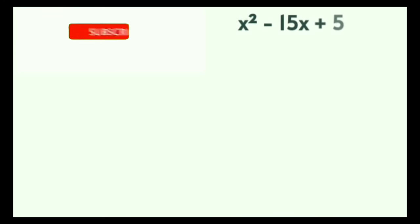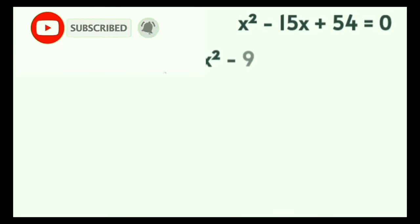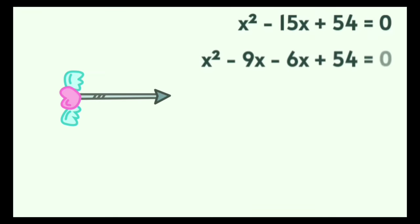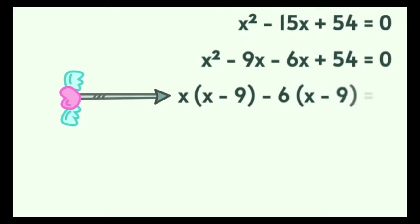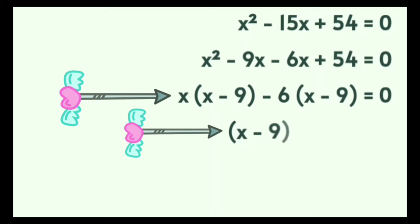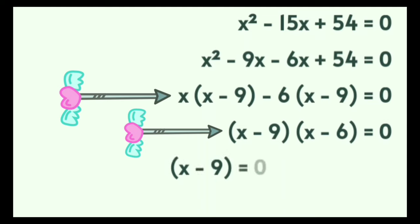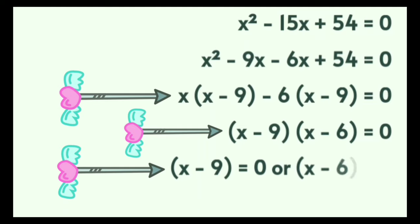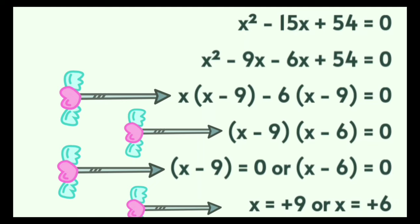Applying that logic, the second step gives x in bracket x minus 9, minus 6 in bracket x minus 9, equals 0. The third step: bracket x minus 9 times bracket x minus 6 equals 0. Fourth step: x minus 9 equals 0 or x minus 6 equals 0. Finally, in the fifth step, the roots of the quadratic equation are x equals positive 9 and x equals positive 6.